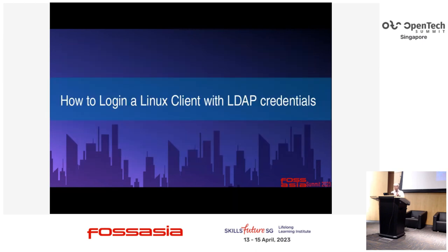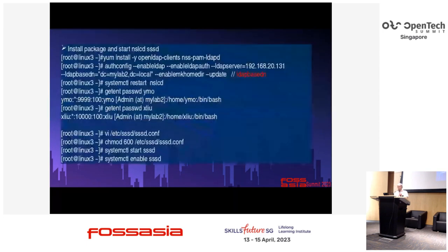How to join the native client with LDAP credentials — it's almost the same logic. First, you need to install packages: install NSLCD, SSSD, and nss-pam-dlogind. Install OpenLDAP clients and do some configurations. Then use getent passwd to make sure you get your credentials from the LDAP server. Then make sure you install SSSD and enable it.